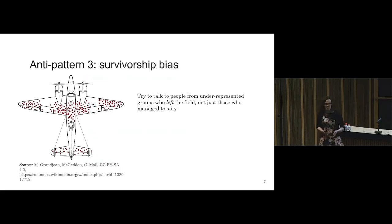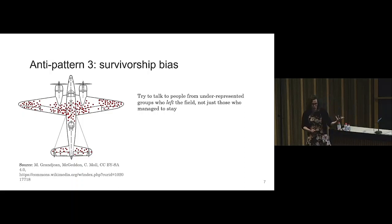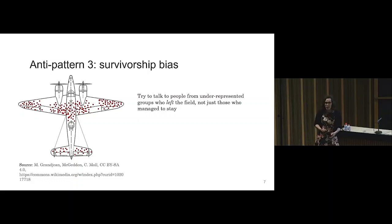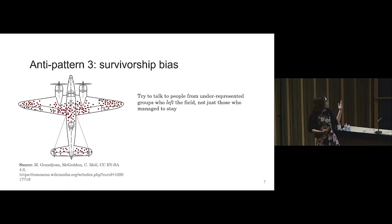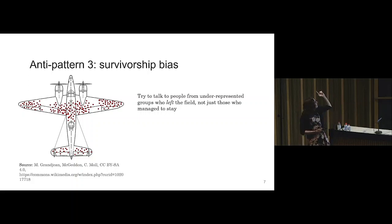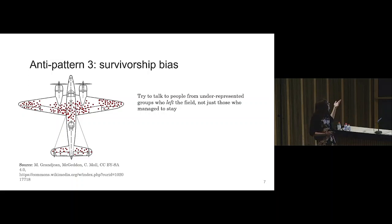The third anti-pattern is survivorship bias. In World War II, the Allied Air Command was trying to armor planes to make them more survivable. Initially, so the story goes, they were only armoring the bits with bullet holes — where planes had been shot — and not the bits that weren't shot. The problem is the planes making it back had obviously survived those shots, whereas the planes shot in the unarmored areas didn't make it back at all. It turns out armoring the non-shot bits improved survivability.